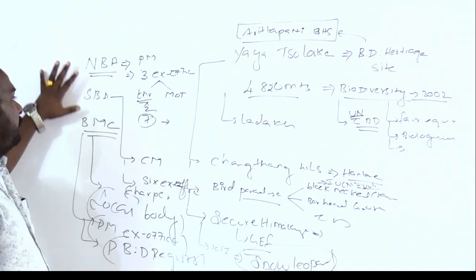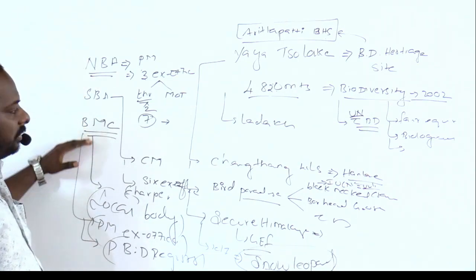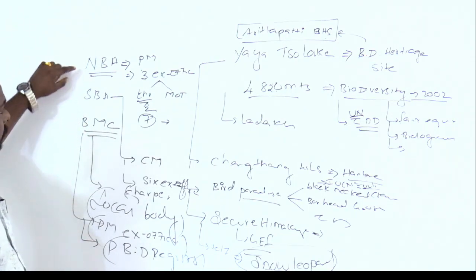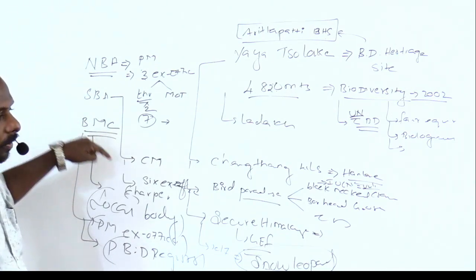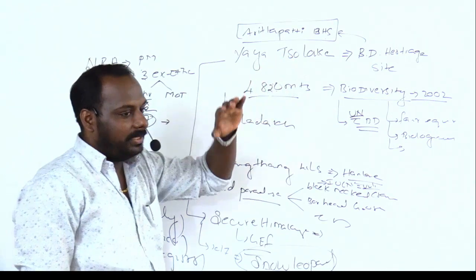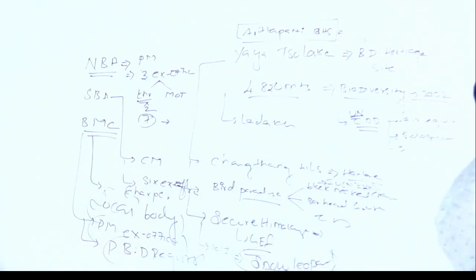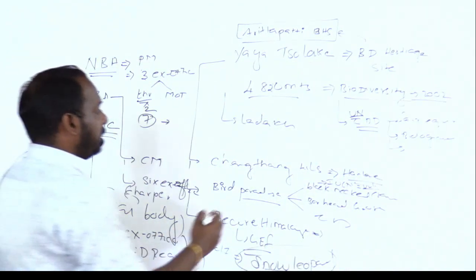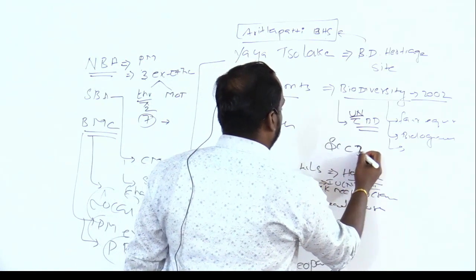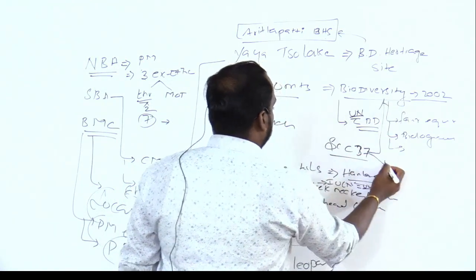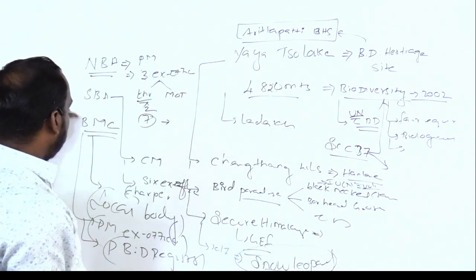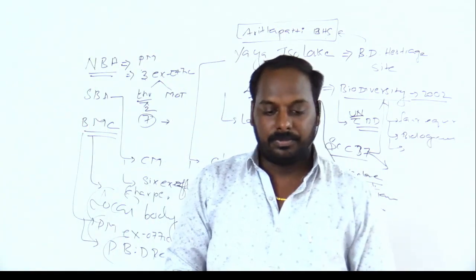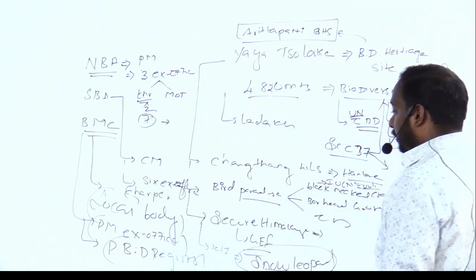State Government with the consultation of the local authority can initiate and list a place as a biodiversity heritage site. This was mentioned in the Biodiversity Act 2002, Section 37. State Government has the authority to initiate with consulting with the local body, BMC. This is about the Biodiversity Heritage Site procedure.